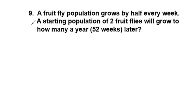Okay, our last problem in this set, problem nine. A fruit fly population grows by half every week. A starting population of two fruit flies will grow to how many a year or 52 weeks later? And so for this one we want to have a is equal to a sub 0, which is 2.